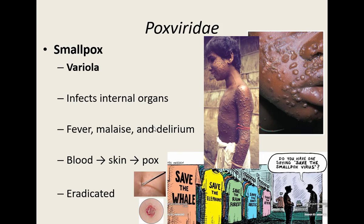Because smallpox is so deadly and spreads rather quickly, there is still concern — the CDC and World Health Organization still have stockpiles of these viruses in their labs. What if the wrong person gets a hold of this virus? No one has been vaccinated since 1972. It could potentially be used as a bioterrorism agent.